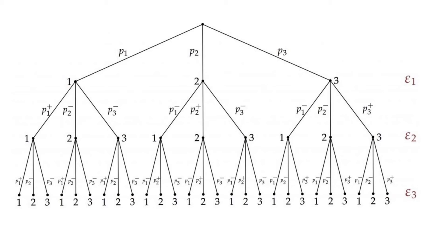This is the general form of first-kind dependence. We can do this for any number of categories — the trees just get more complex to draw. With four, five, or hundreds of categories, the weights work exactly the same way: always weighting subsequent outcomes in favor of what happened to the first random variable.